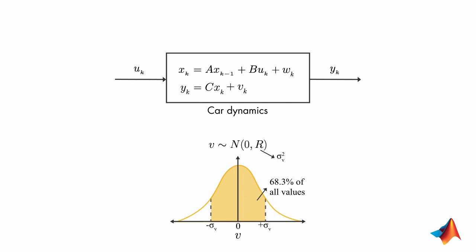Similarly, the process noise is also random and assumes a Gaussian distribution with covariance q. Now we know that the measurement is noisy and therefore what we measure doesn't quite reflect the true position of the car.